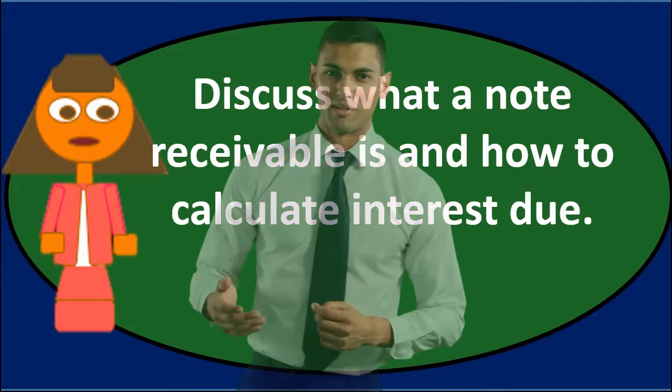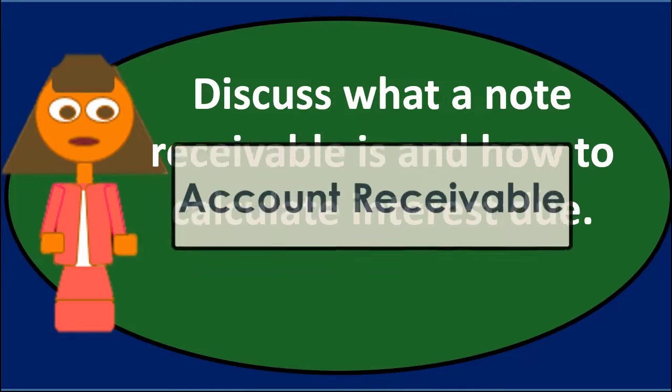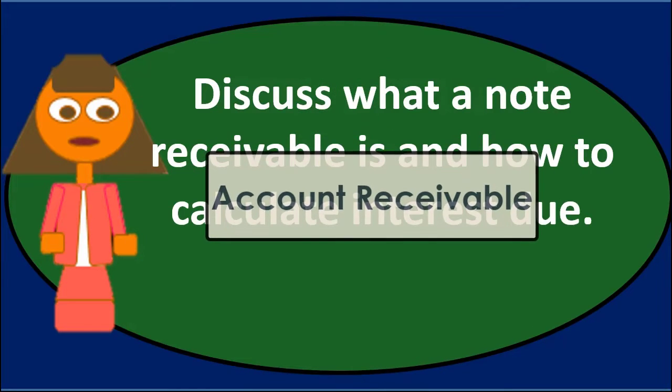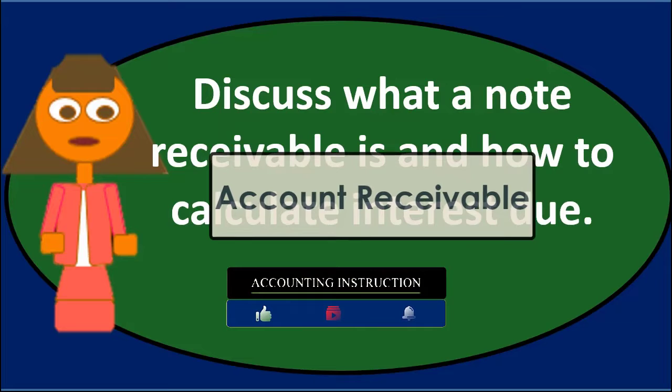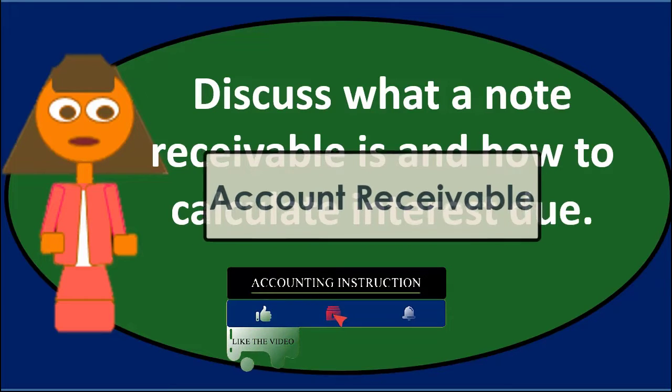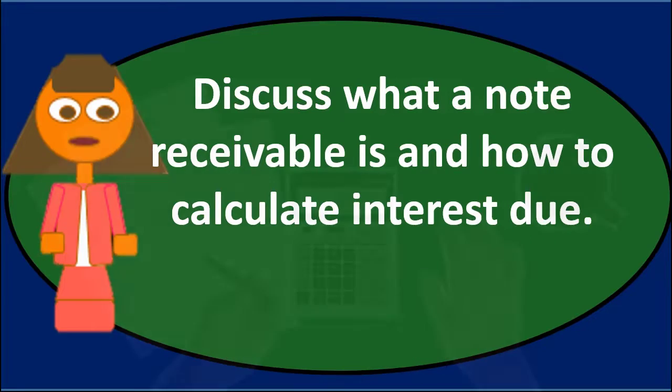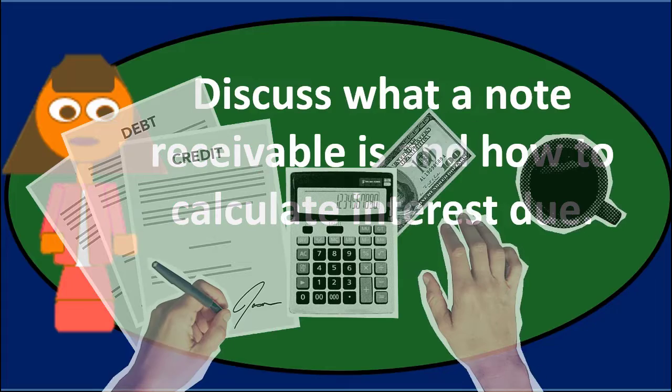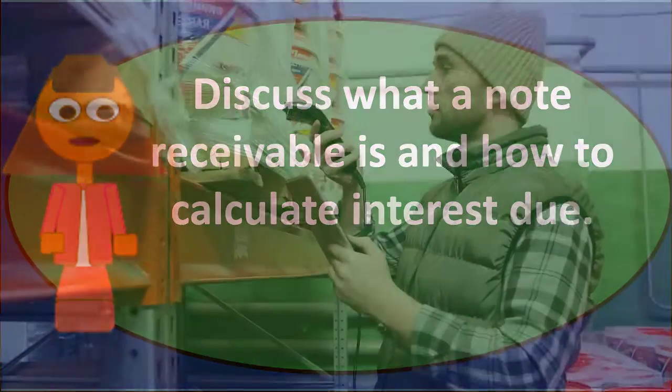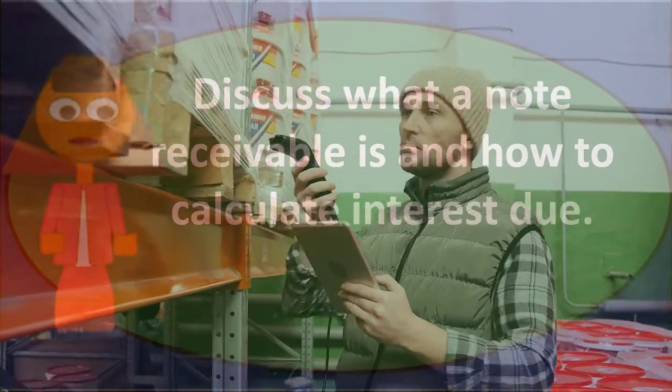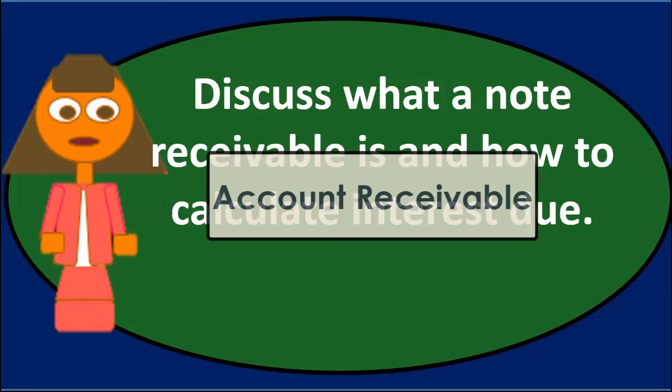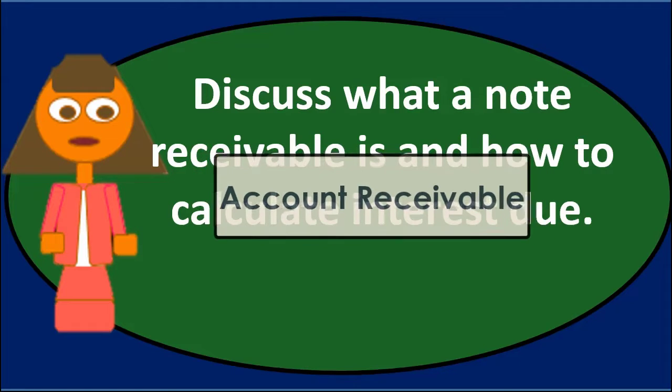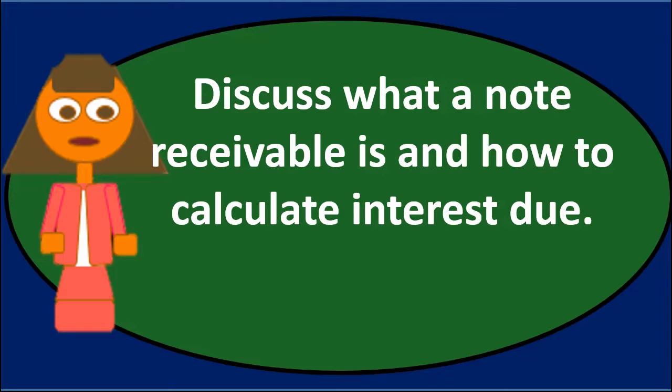It's often useful when talking about notes receivable to compare them to accounts receivable. What's the difference between a note receivable and an accounts receivable? Accounts receivable is the normal type of business transaction we use to make sales. When we make a sale on account, we typically debit accounts receivable and credit sales. If we have sale of inventory at the same time under a perpetual system, debit cost of goods sold and credit inventory.